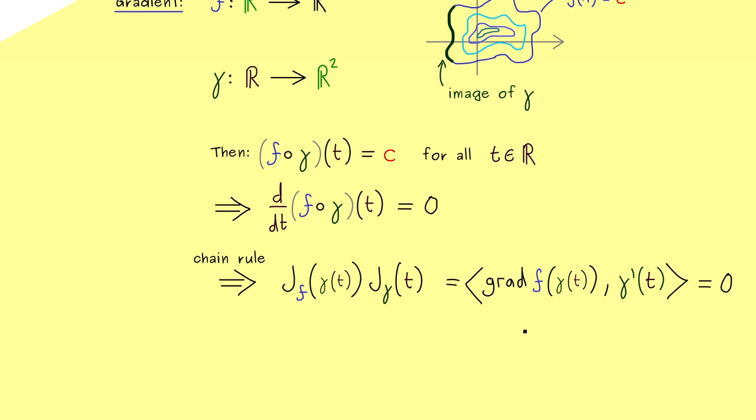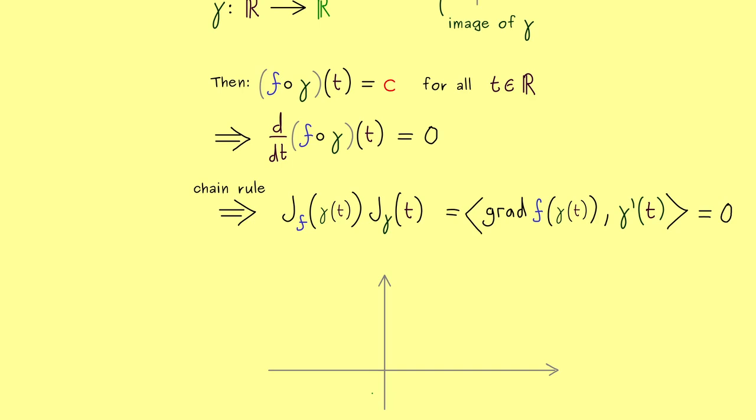Now in order to understand what this means we have to look at the image of gamma again. Hence again in the two dimensional plane it was given by such a curve. And then you should know if you pick any point on this curve the derivative of gamma, gamma prime, is tangential to the curve.